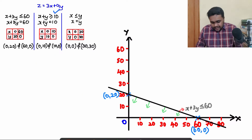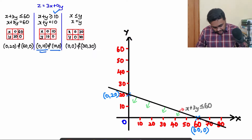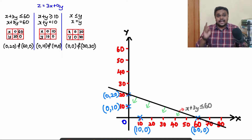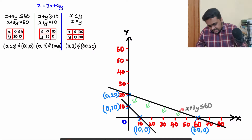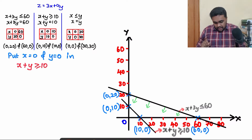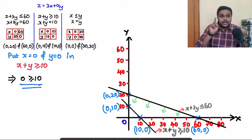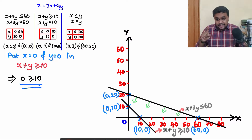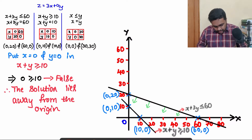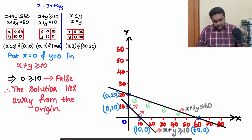For the second line x + y = 10, marking points (0, 10) and (10, 0) on the graph. Substituting x = 0, y = 0 into x + y ≥ 10: LHS = 0, and 0 ≥ 10 is false. So the solution lies away from the origin — shade away from the origin.